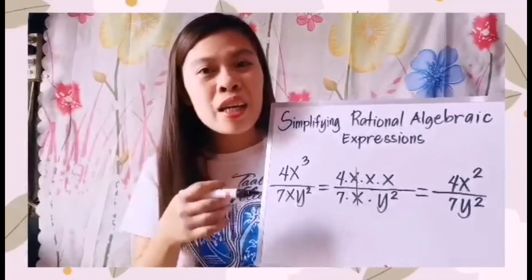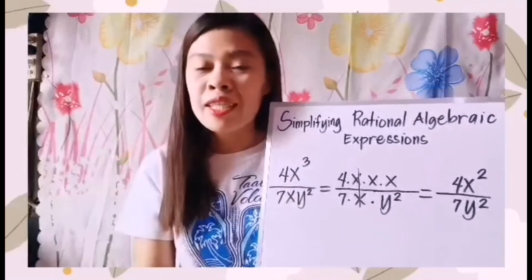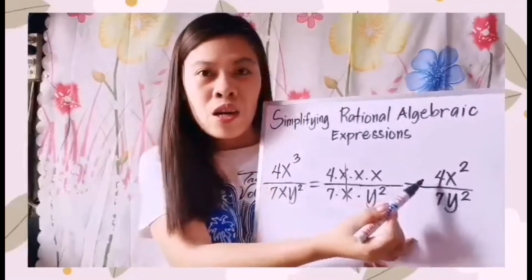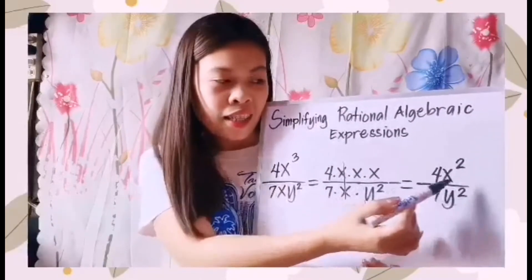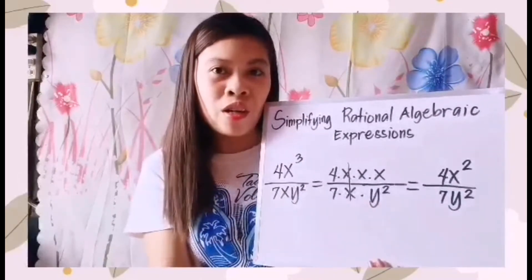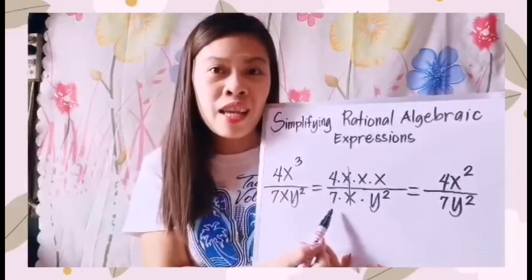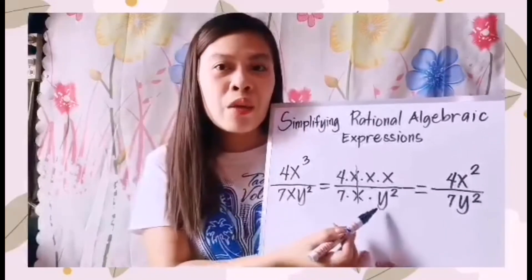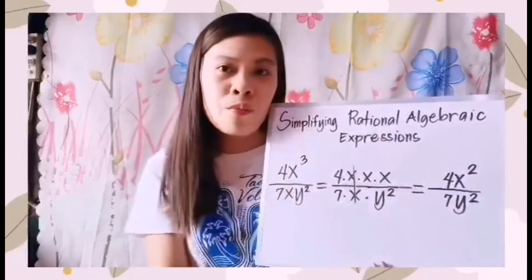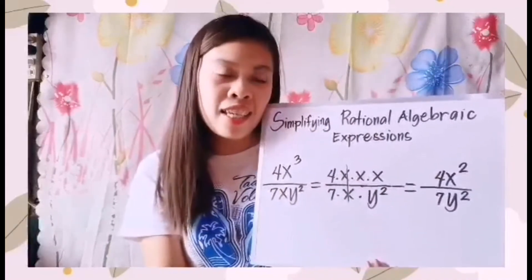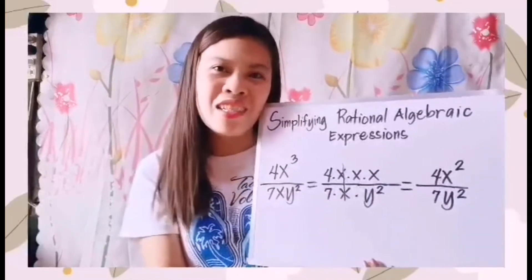Picking up the remaining numbers and variables: we have 4, and we have 2 x's left, which gives us x squared — so 4x squared. Over the denominator, we have 7 and y squared. So our simplified answer is 4x squared over 7y squared.